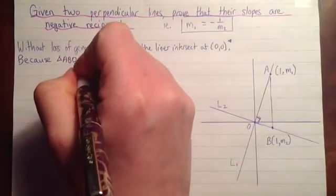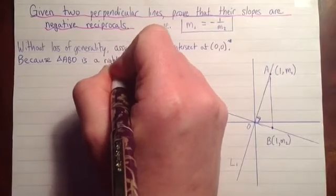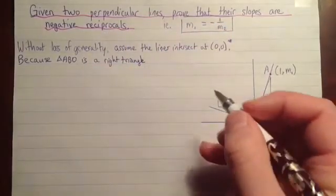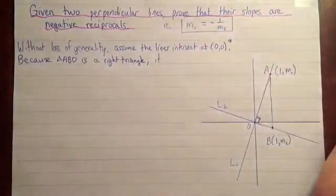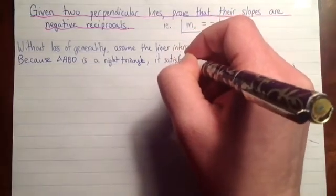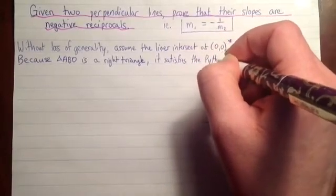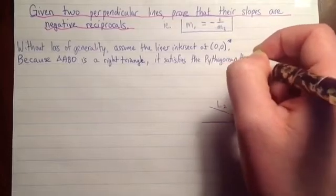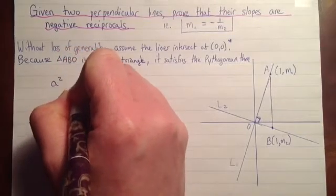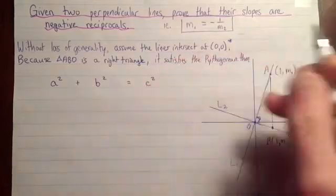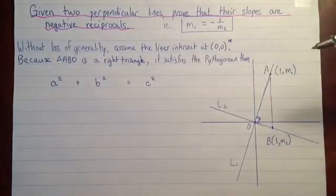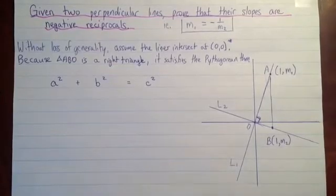Because triangle ABO is a right triangle, and again, we know that because the lines are perpendicular, it satisfies the Pythagorean theorem. So what we have is A squared plus B squared equals C squared, where A and B are the lengths of the sides of the two legs, and C is the length of the hypotenuse.